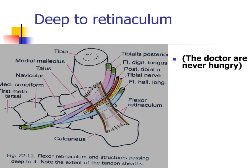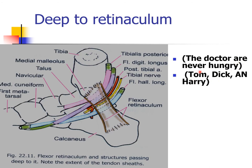Deep to the flexor retinaculum, from medial to lateral: tibialis posterior, flexor digitorum longus, then the posterior tibial artery, tibial nerve, and flexor hallucis longus. You can remember this with the mnemonic 'Tom, Dick, and Harry': Tom = tibialis posterior, Dick = flexor digitorum longus, Harry = flexor hallucis longus. Alternatively, 'Doctor R Never Hungry': Doctor = digitorum longus, R = artery (posterior tibial artery), N = nerve (tibial nerve), Hungry = hallucis longus.